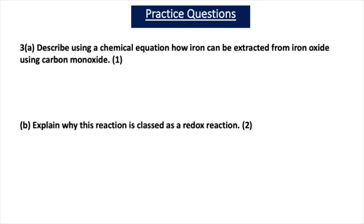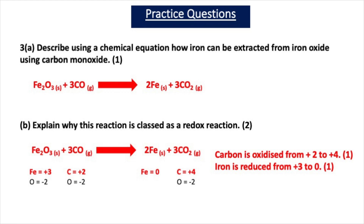Question 3A asks you to describe using a chemical equation how iron can be extracted from iron oxide using carbon monoxide. Iron oxide reacts with carbon monoxide to form iron and carbon dioxide: Fe2O3 + 3CO → 2Fe + 3CO2 — one mark. Part B asks why this reaction is classed as a redox reaction — two marks. It is a redox reaction because carbon is oxidised from plus 2 to plus 4 (one mark), and iron is reduced from plus 3 to zero (one mark).